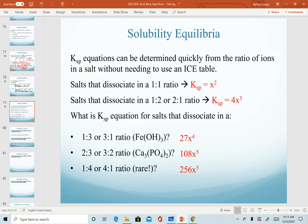And so the summary slide that I have here next summarizes all of this. So again, any salt in a 1 to 1 ratio would be x squared. Any salt in a 1 to 2 or 2 to 1 ratio would be 4x cubed. We just solved for calcium phosphate as 108 x to the fifth.